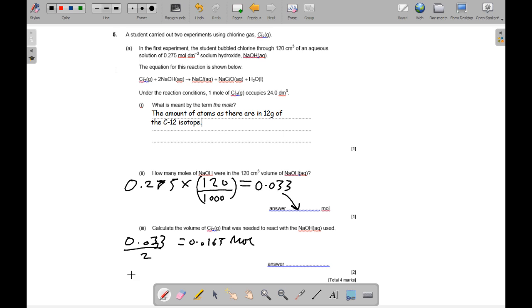And then times that by 24, we get 0.0396 decimeter cubed. Or alternatively, if you wanted to express it in centimeter cubed, you can.